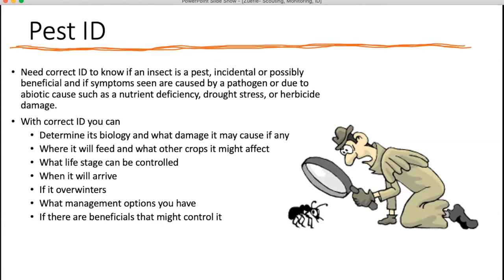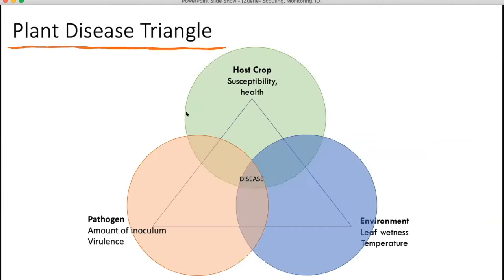You also need to know if something is caused by an abiotic factor, a nutrient deficiency, or drought — you want to distinguish whether this is a disease or some kind of nutrient imbalance. Once you know what it is, you can determine the management needed. You'll also know what crops may be affected, when the best time is to control it, what life stage to target, whether the pest overwinters, if there are beneficials you can use, and if there are resistant varieties available.